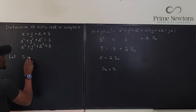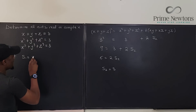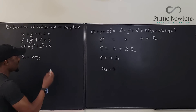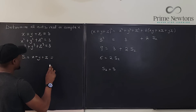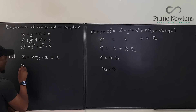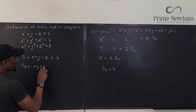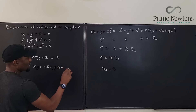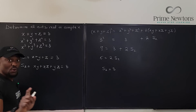Let S1 = x+y+z = 3 (the sum of all roots), and let S2 = xy+xz+yz, which we just found is also equal to 3. Those are two of the three ingredients we need.